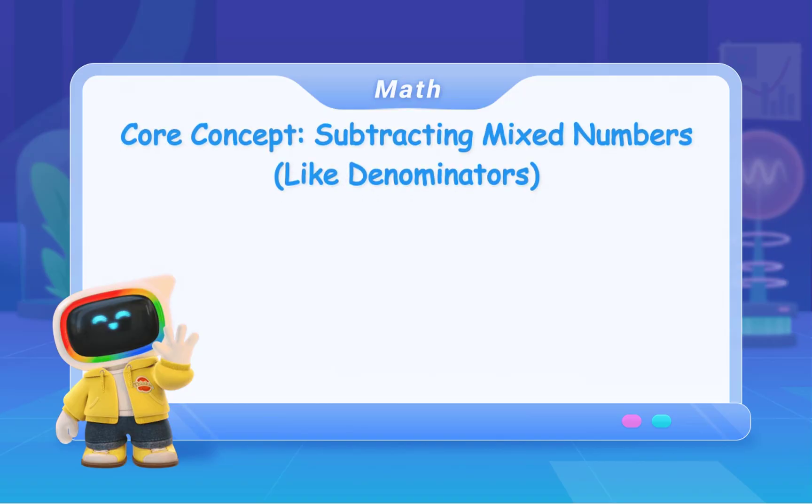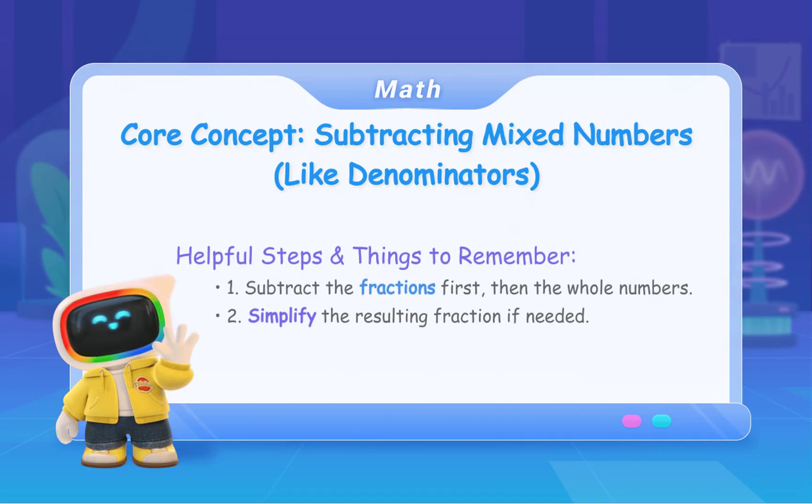Core Concept: Subtracting mixed numbers with like denominators. Helpful steps and things to remember. First, subtract the fractions first, then the whole numbers. Second, simplify the resulting fraction if needed.